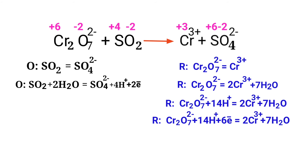Make electron gain equivalent to electron loss. The electrons lost in the oxidation half-reaction must equal the electrons gained in the reduction half-reaction. The oxidation half-reaction has 2 electrons, while the reduction half-reaction has 6 electrons. To equalize them, multiply the oxidation half-reaction by a coefficient of 3.